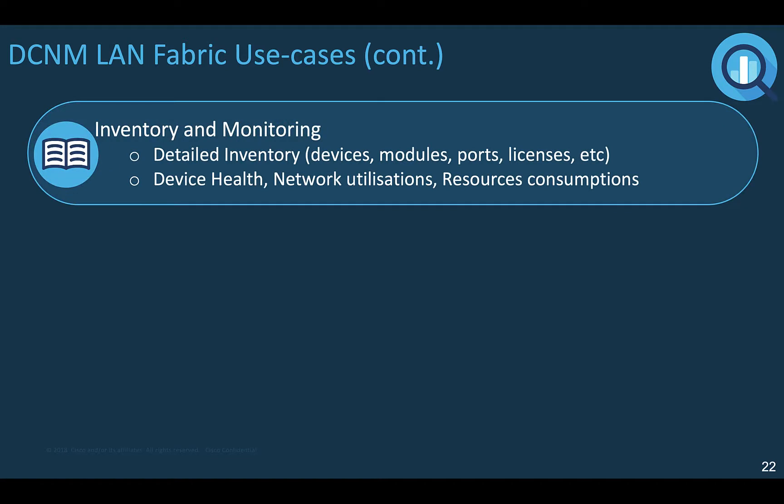Some network managers may want to use DCNM for inventory or monitoring purposes. For example, they deployed manually or with API management tools the network fabrics, and they want to use DCNM for device health monitoring, network utilization, hardware resource consumption, device availability, device features, licensing, inventory, etc.